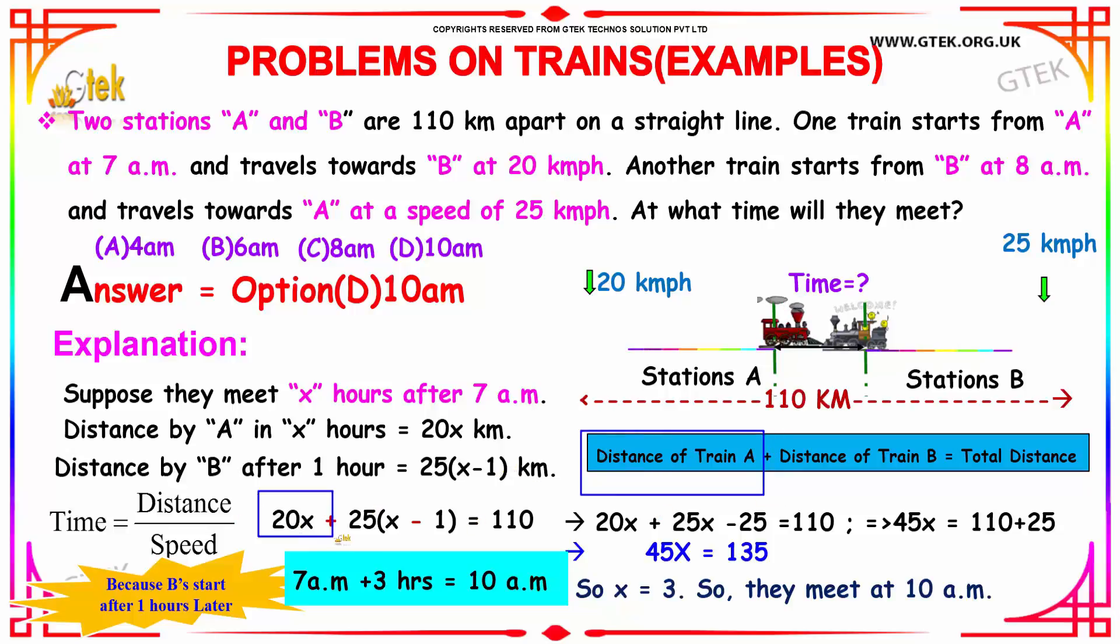Distance of train A 20X plus 25 into X minus 1 is equal to 110. Solving this one, you got 20X into 25X into minus 25 is equal to 110. We got 45X is equal to 110 plus 25, so 45X equal to 135. X equal to 3. After 7 a.m., it took 3 hours to reach another train here. 7 plus 3 is equal to 10 a.m. So the option is D.